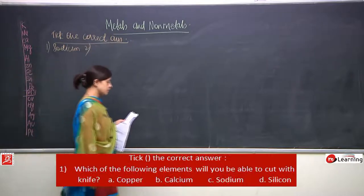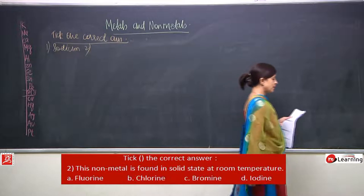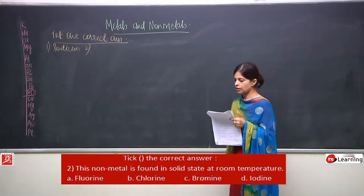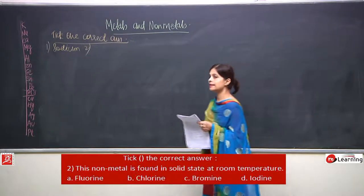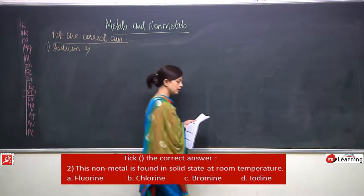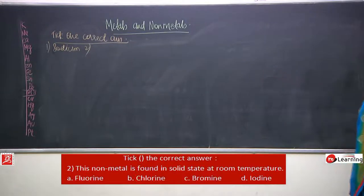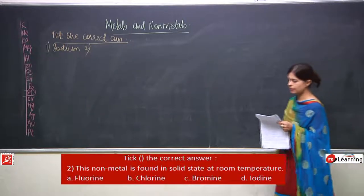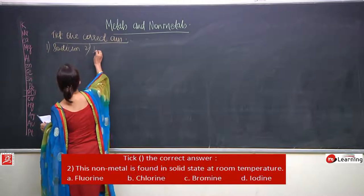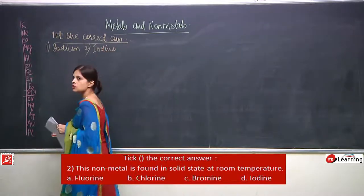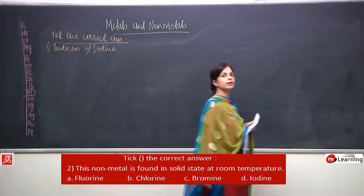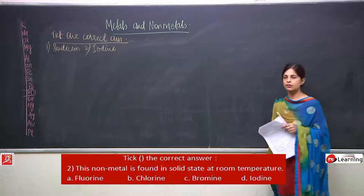Second question: this non-metal is found in solid state at room temperature. Reading the options — fluorine is a gas, chlorine is a gas, bromine is liquid, and iodine is found in solid state at room temperature. Iodine is also the only non-metal which has more lustre.